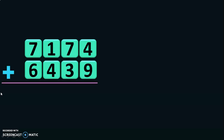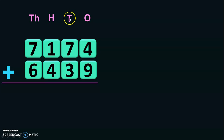Here we have two four-digit numbers for addition: 7,174 plus 6,439. First write down the place values — ones, tens, hundreds, and thousands. Next, start the addition from the ones place.